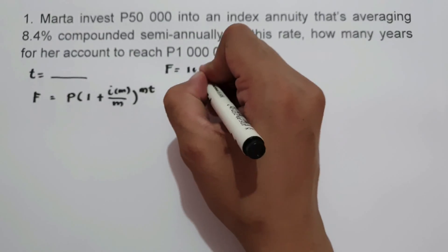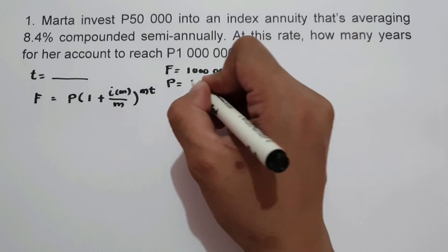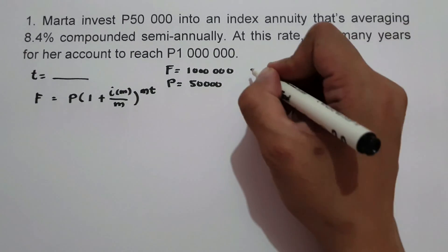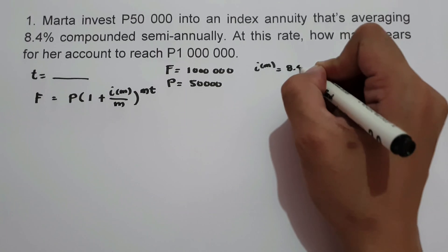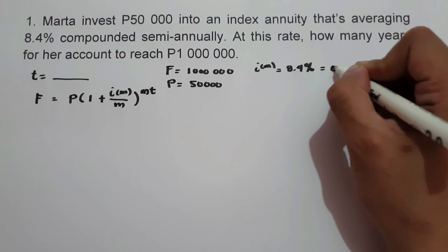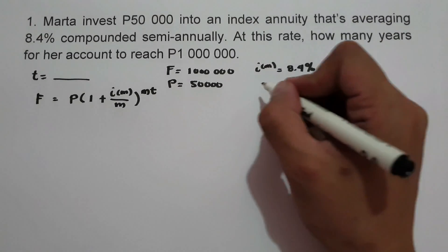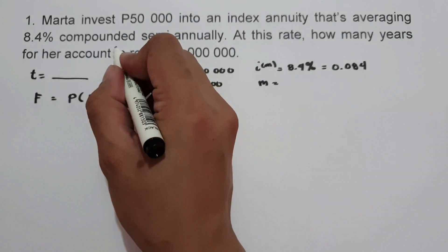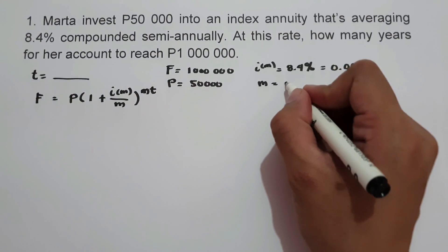Let us identify the given values. F, the future value, is $1,000,000. P, the principal, is $50,000. The nominal rate is 8.4% or 0.084. Since the interest is compounded semi-annually, the frequency of conversion M is 2.